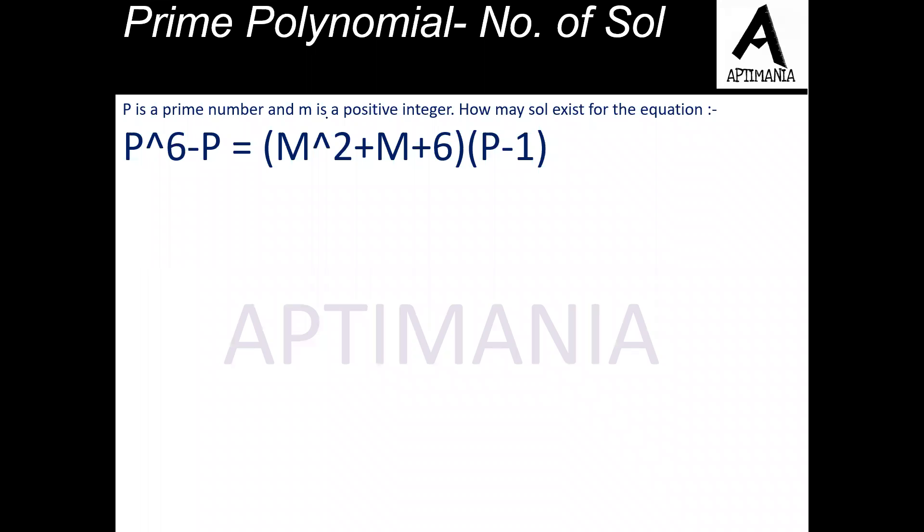P is a prime number and M is a positive integer. We need to find how many solutions exist for the equation P^6 - P equals M² + M + 6 multiplied by P - 1.